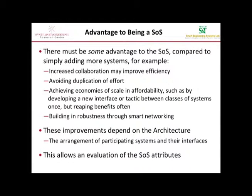So there's another way that having a system of systems should help you perform a task better. A system of systems can also improve your robustness by having the systems be aware of what each one can do — and therefore if one is missing, the other systems being aware of that can change their behavior. These improvements depend on the architecture: the types, numbers, and arrangements of the systems you choose, and also how you make them interface — which ones talk to each other, what do they say, and so on.